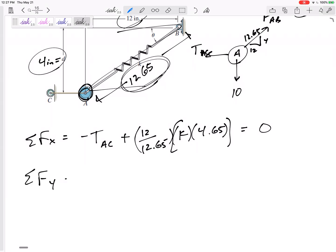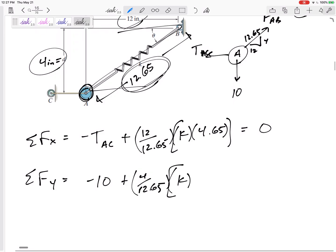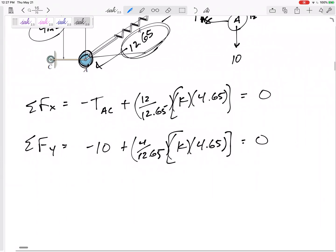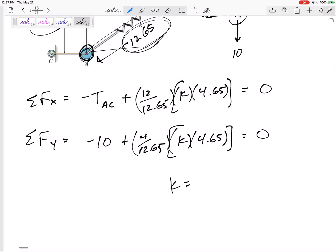So summing the forces in the Y direction, negative 10 pointed down, but pointed up the 4 over 12.65 component of the force K delta X. So from this one, actually from this one alone, that's kind of the only equation I needed to solve for K. I would get a K value of 6.8.